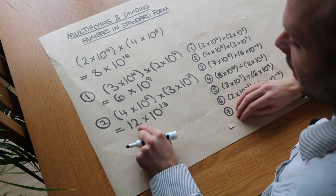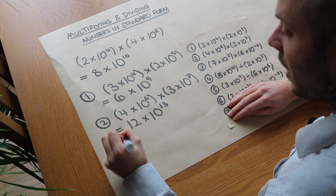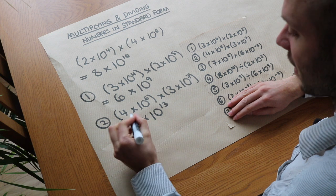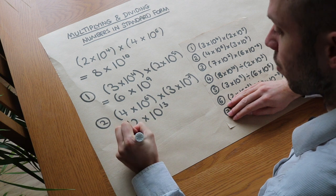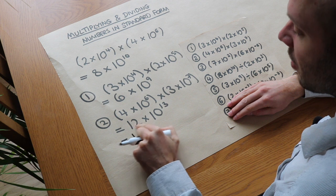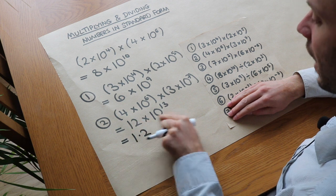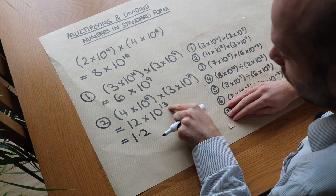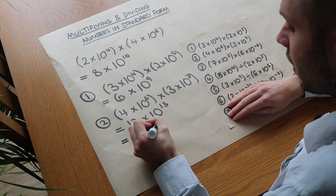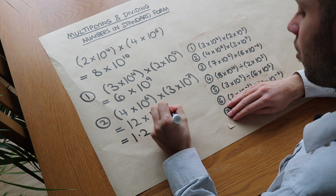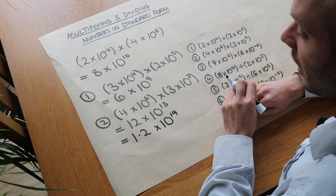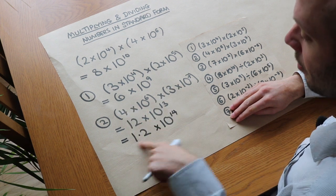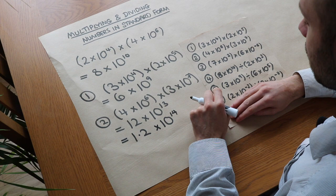That number is not between 1 and 10. So what we do is make that number 10 times smaller so it's between 1 and 10 — making it 1.2. Now if we made that 10 times smaller, to compensate we have to make that 10 times bigger, so the power goes up by 1 — it's 10 to the power of 14 — and now that is in standard form. So you multiply as before, but you might have to adjust to make that number between 1 and 10.